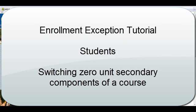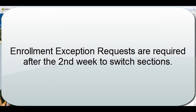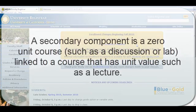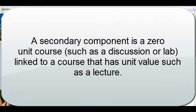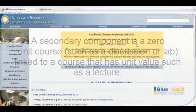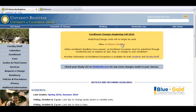To switch between zero-unit secondary components of a course, you must request an enrollment exception after the enrollment deadline. A secondary component is a zero-unit course, such as a discussion or lab, linked to a course that has unit value, such as a lecture. Be sure to check enrollment deadlines, as they have changed for fall quarter.